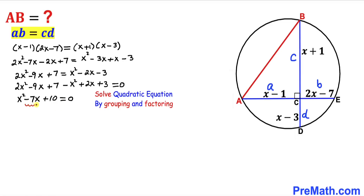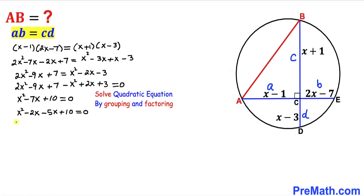Let's focus on this negative 7x — this could be written as negative 2x minus 5x. So this becomes x squared minus 2x minus 5x plus 10 equals 0. Between the first two terms, x is in common, and in the second two terms negative 5 is in common. So we write x times (x minus 2) minus 5 times (x minus 2) equals 0.